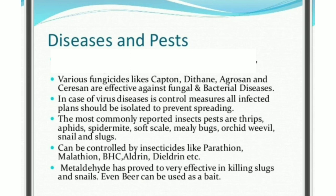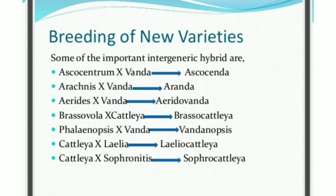Diseases and Pests: Various fungicides like Captan, Dithane, Agrosyn and Saracen are effective against fungal and bacterial diseases. In case of viral diseases, plants should be isolated to prevent spreading. The most commonly reported insect pests are Thrips, Aphids, Spider Mite, Soft Scale, Mealybugs, Orchid Weevil, Snails and Slugs. These can be controlled by insecticides like Parathion, Malathion, BHC, Aldrin, and Dieldrin. Metaldehyde has proved very effective in killing slugs and snails; even beer can be used as bait. Breeding of new varieties: some important intergeneric hybrids are also covered.